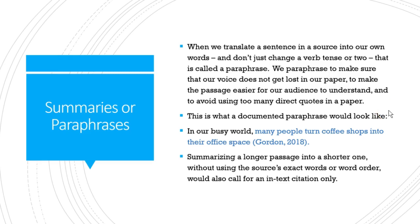Summaries and paraphrases — when we translate a sentence from a source into our own words, not just changing a verb tense or making a word plural, but truly changing it into our own language, that's called a paraphrase. We paraphrase to make sure our voice is not lost in the paper, to make passages easier for the audience to understand, and to avoid using too many direct quotes. Here's what a documented paraphrase looks like: 'In our busy world, many people turn coffee shops into their office space' — it's still cited because it came from a source. Summarizing a longer passage into a shorter one without using the source's exact words also calls for an in-text citation.